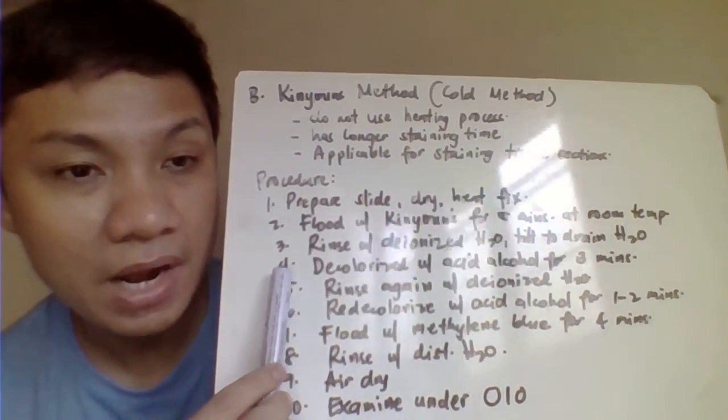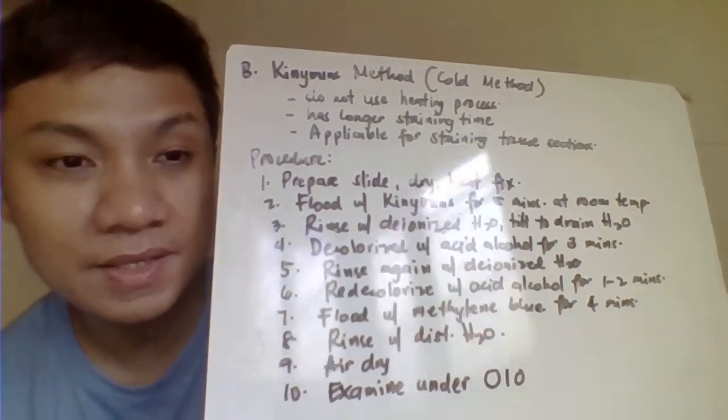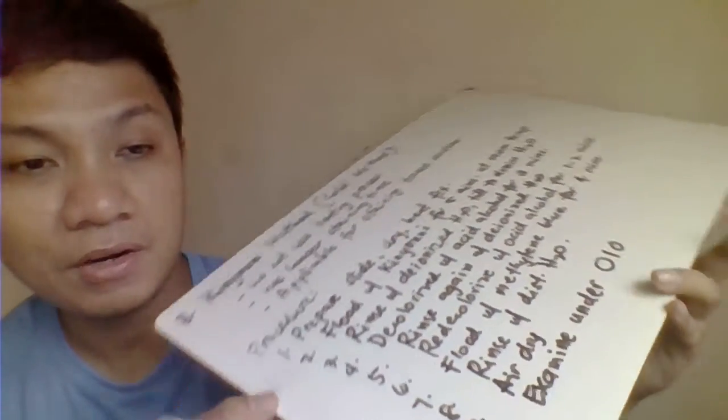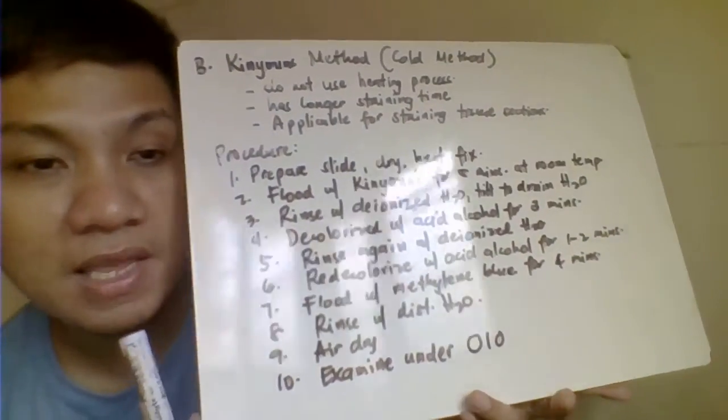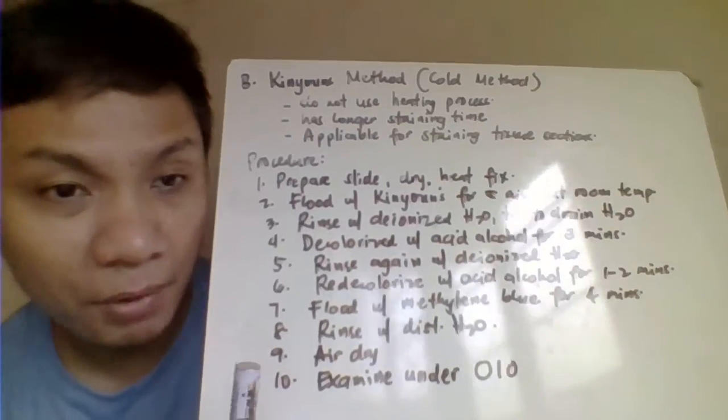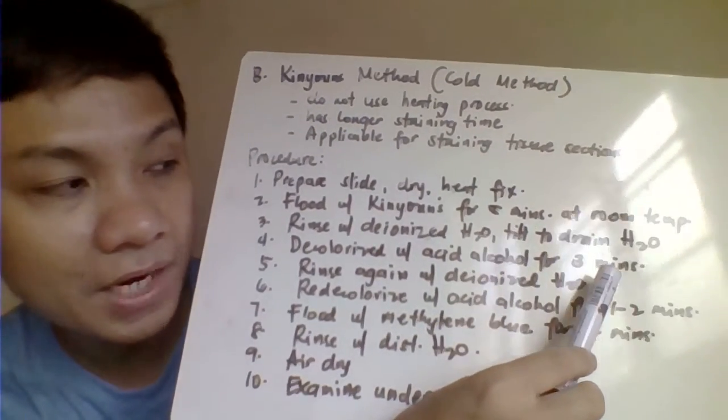And after that one, try to decolorize with your acid alcohol here. Applying here the acid alcohol in your slide. So parang ganun ulit. Titilt mo siya. Magpa-flow lang siya dito sa taas, and that would allow the removal here of your Carbolfuchsin. Para complete removal for decolorization process. That's for 3 minutes.